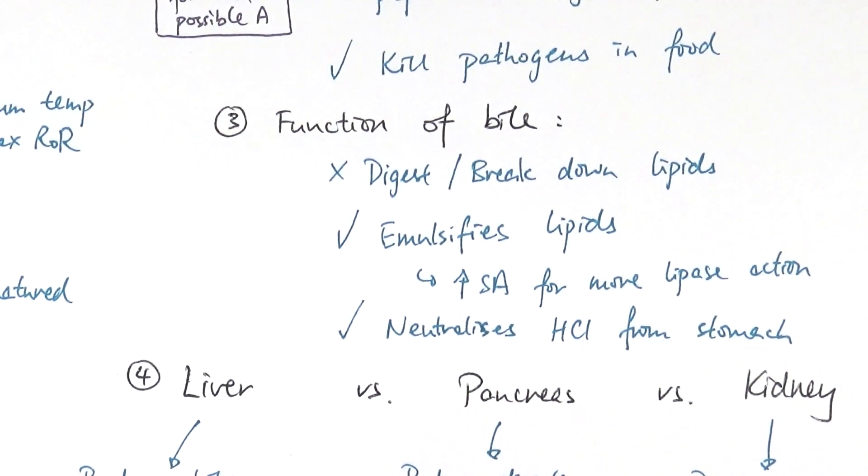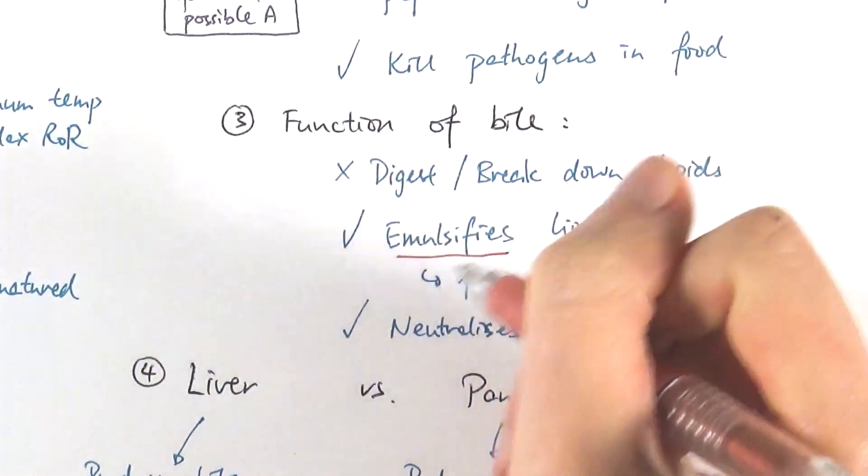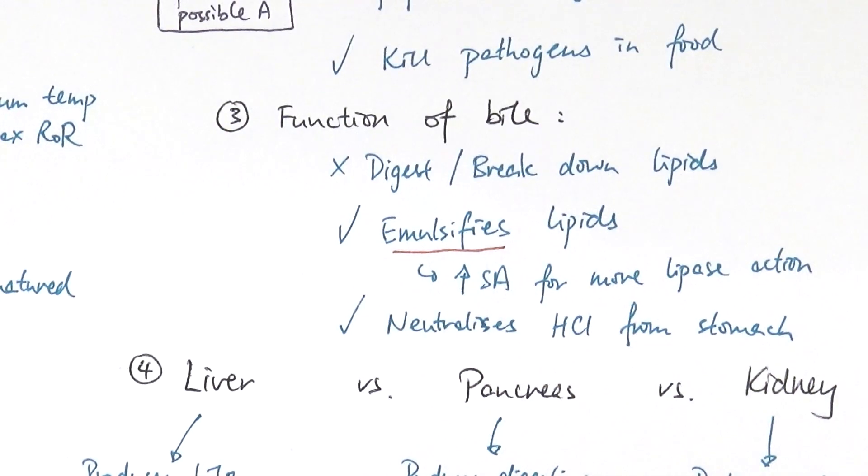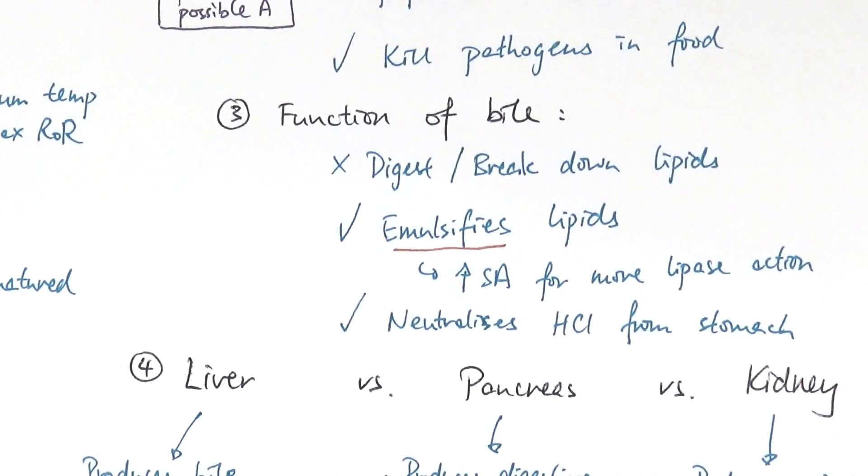Bile is a chemical that emulsifies lipids. This is a very useful word or a very important word. Emulsification means that's the process in which you are physically or mechanically breaking large oil drops into smaller oil droplets.